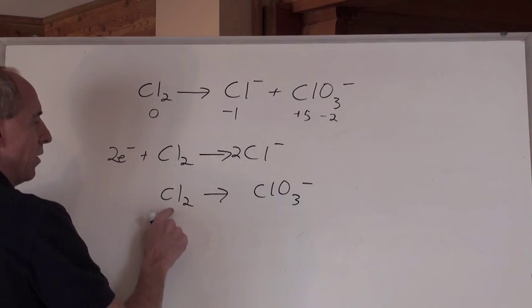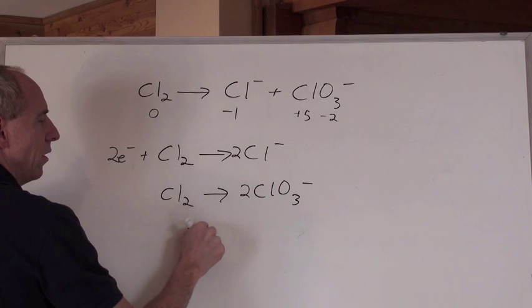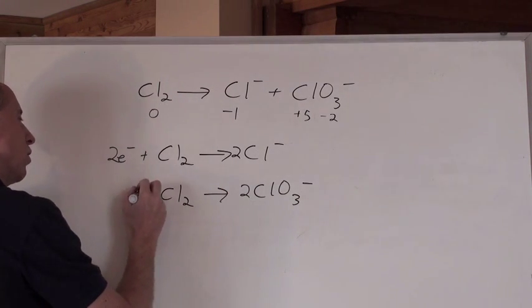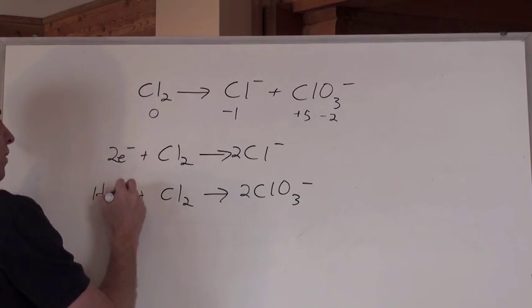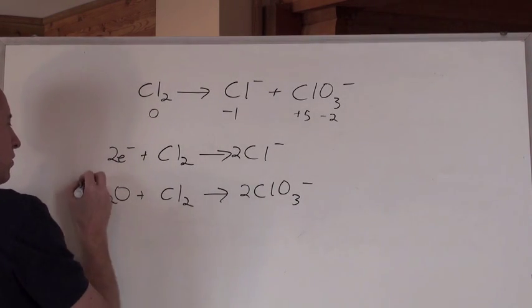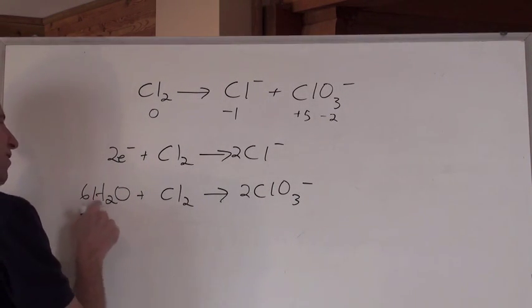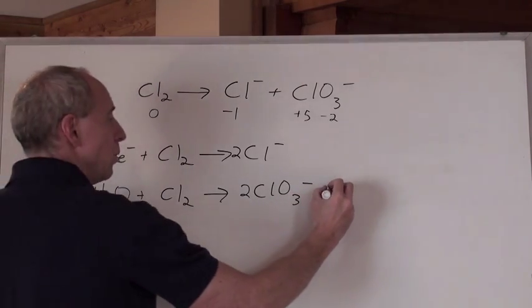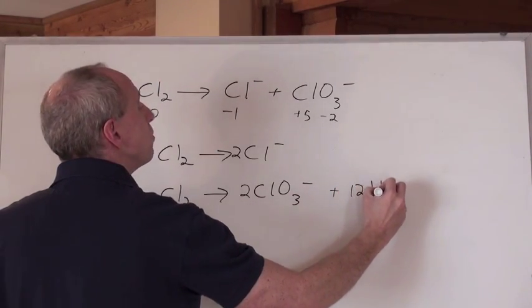Okay. What's going to happen here? Two Cls here, two here. You need oxygens over here, so you need to add water. How many? Two times three is six, so you're going to have to put a six here. But now you've got twelve hydrogens here. Well, then go put twelve hydrogens here, but twelve H positives.